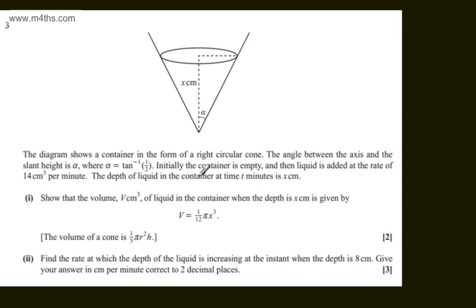The depth of the liquid in the container at time t minutes is x centimeters. In the first part of the question, for two marks, we need to show that the volume, v centimeters cubed, of the liquid in the container, when the depth is x centimeters, is given by v equals one twelfth pi x cubed.